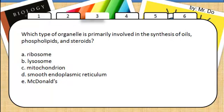Question 3. Which type of organelle is primarily involved in the synthesis of oils, phospholipids, and steroids? That would be the smooth endoplasmic reticulum.